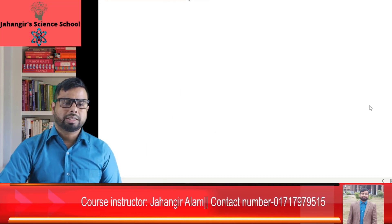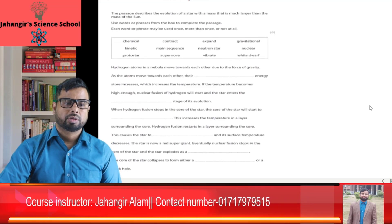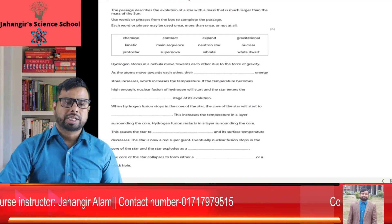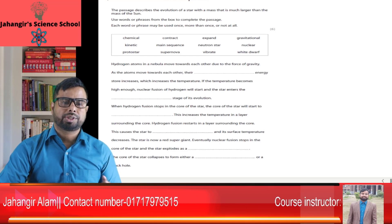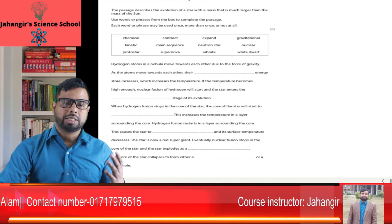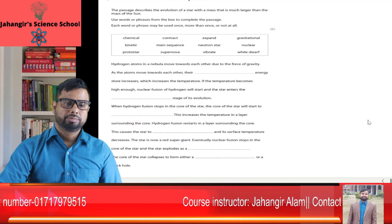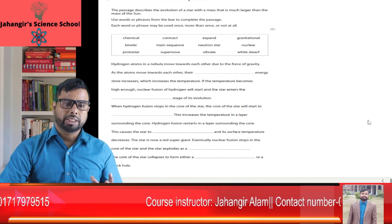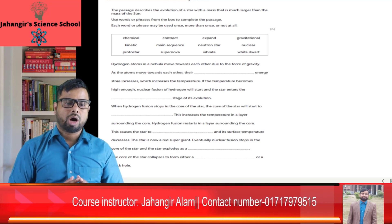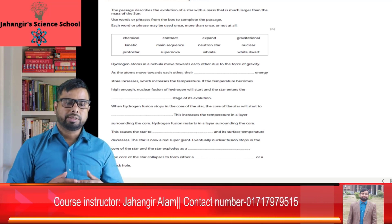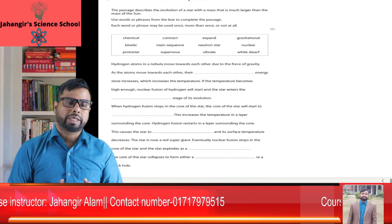Question number 1 — answer all the questions. The passage describes the evolution of a star with a mass that is much larger than the mass of the Sun. Use the words or phrases from the box to complete the passage. Each word or phrase may be used once, more than once, or not at all.